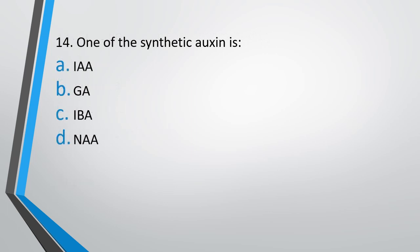Question 14: One of the synthetic auxins is — IAA, GA, IBA, or NAA. The correct answer is Option D, NAA is a synthetic auxin.